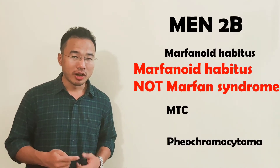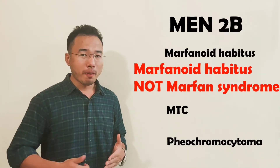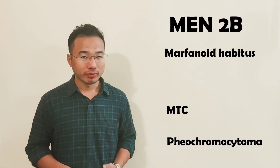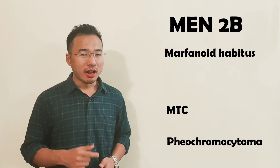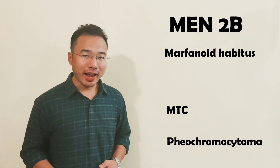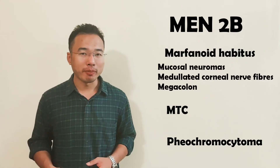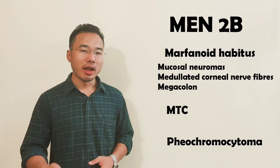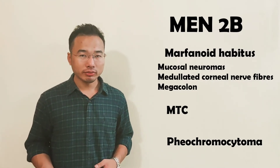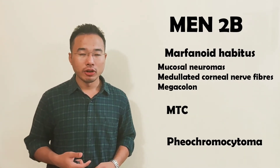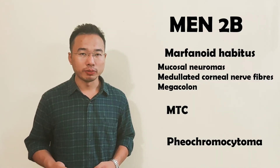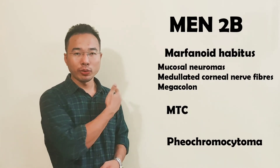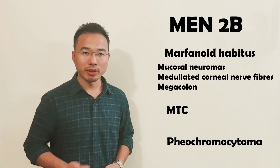The story gets interesting. Marfan syndrome had come along and they threw parathyroid adenoma out of the group because they thought four is a crowd and wanted a group of three. But Marfan syndrome brought along his whole gang — everyone's name starts with M: mucosal neuromas, medullated corneal nerve fibers, and megacolon. So these are all components of MEN2b syndrome. There is no parathyroid adenoma in MEN2b because he felt bad and went back to MEN1, back to his family.